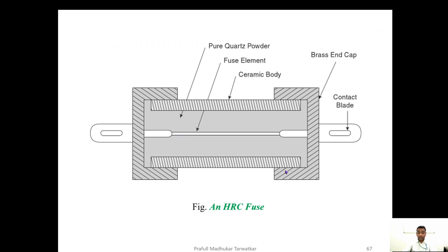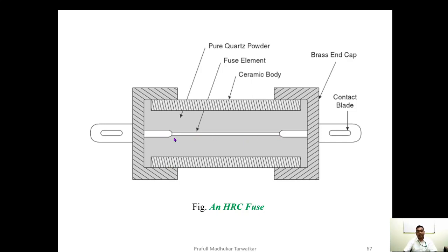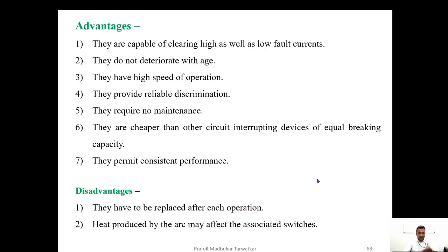The second type is the high-rupturing capacity (HRC) fuse. It is a totally enclosed type filled with quartz powder. When the fuse melts and an arc forms, the quartz powder helps in quenching the arc. The drawback compared to the KitKat fuse is that after every operation of the HRC fuse, the complete cartridge must be replaced since the wire cannot be individually rewired — making it a costly affair. HRC fuses can be used up to 1000 amperes.